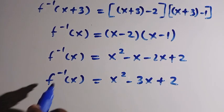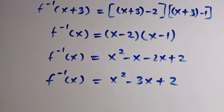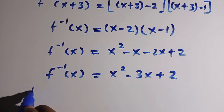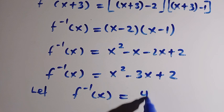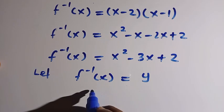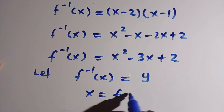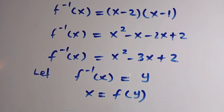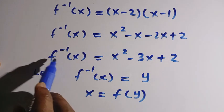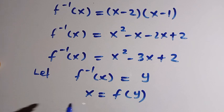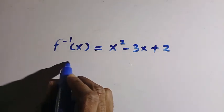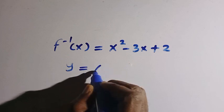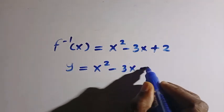Another step now is we have to reduce this f inverse of x to f of x. What we do here is suppose we let f inverse of x be equal to y. So it shows that for every f of x here, x will equal f of y. After getting this, we have already let f inverse of x equal y, so we have to replace it with y and solve. Since we let f inverse of x equal y, we replace it: y equals x squared minus 3x plus 2.